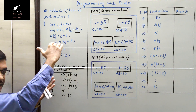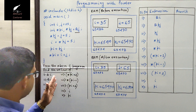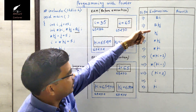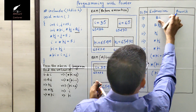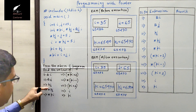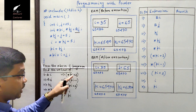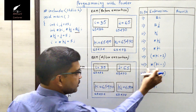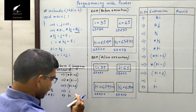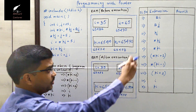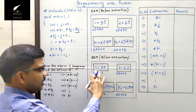The question is: from the above C program we have to find the values of the following expressions. I have listed them in tabular form: ampersand i, ampersand j, pj, asterisk pj, asterisk pi, asterisk pi plus 2, asterisk of pi minus 1, pi plus 2, i, and pi. We will find the result of each of these variables and expressions using the RAM diagram.